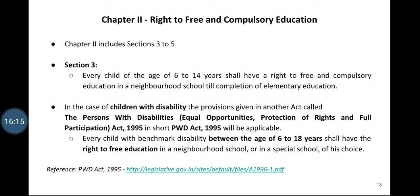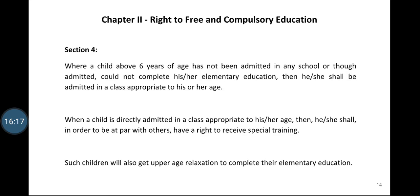Coming back to the RTE Act, Section 4 says that if a child above 6 years of age has not been admitted in any school, or was admitted but has not completed elementary education, he or she shall be admitted to an age-appropriate class. For example, suppose we find a child aged 8 years who has not been admitted in any school — this child will be admitted to class 3, not class 1, because of the age.